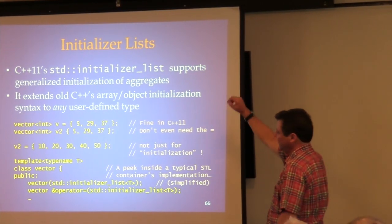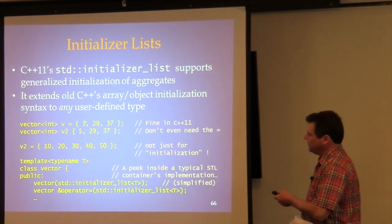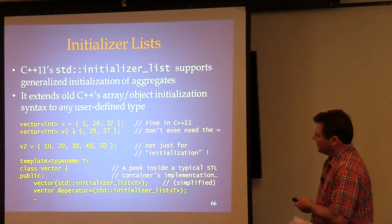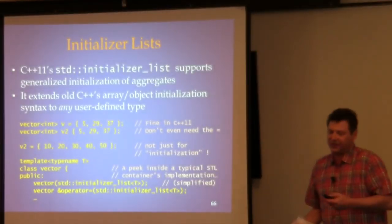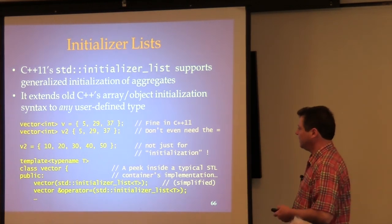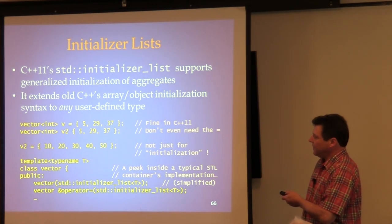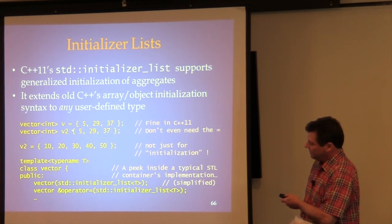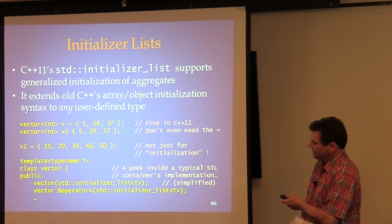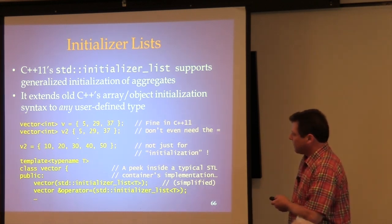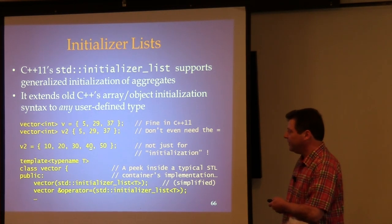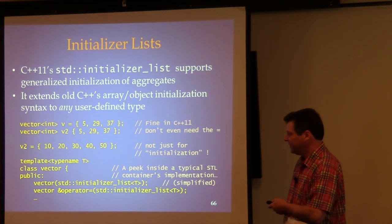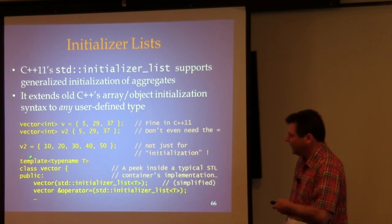The equal sign becomes optional in new C++, and the convention going forward is to omit it. Notice that assigning to a vector with a braced list is not a reinitialization — it's assignment. The vector not only has a constructor taking an initializer list, it also has a copy assignment operator taking an initializer list. So the initializer list is being constructed and passed to the assignment operator.